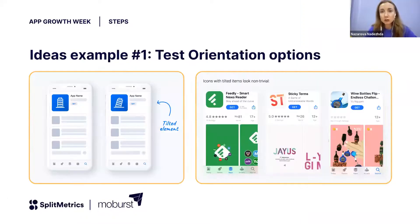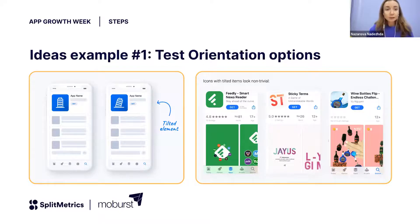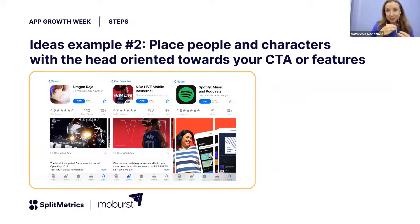For ideas, don't try to think too big — even small changes could bring huge impact. You could start by testing orientation options. Tilted objects attract attention and you can stand out against competitors by tilting elements on an icon or screenshot. Also, you could place people and characters with their heads oriented toward the bottom of the screen, manipulating the user's gaze to follow the view and engage them to press the get button or click on your screenshots.